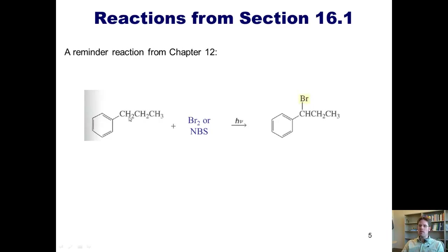In this example, I have a 3-carbon long chain called a propyl group attached to my benzene ring. Thus, my alkylated benzene is a benzene that has an alkyl chain, in this case a propyl group dangling off of it. So here's the reaction I want to remind you of.